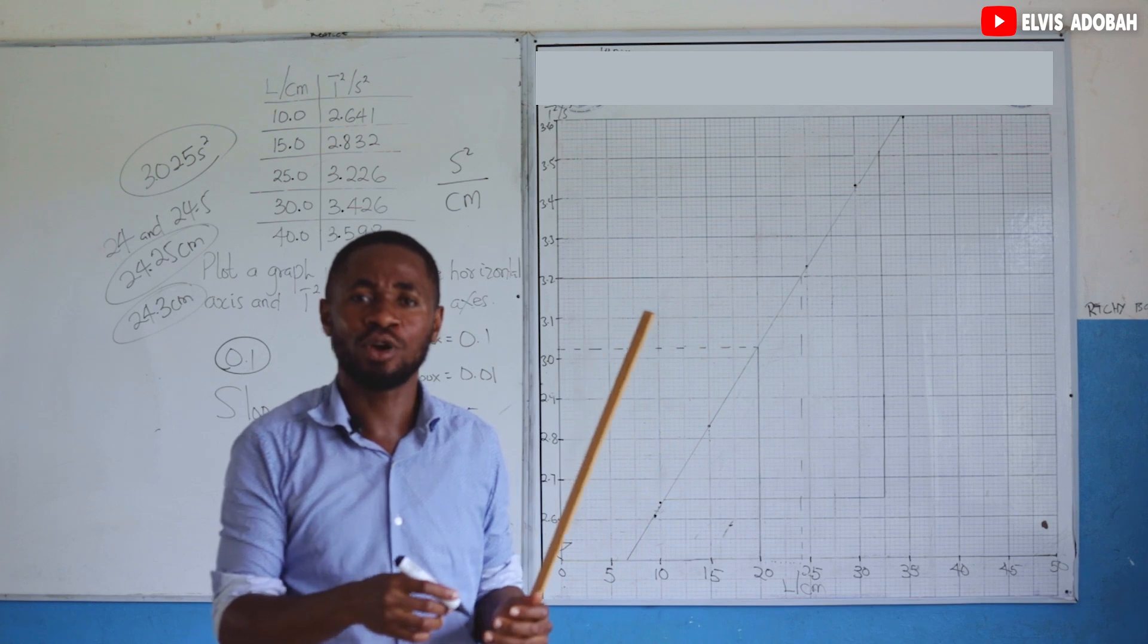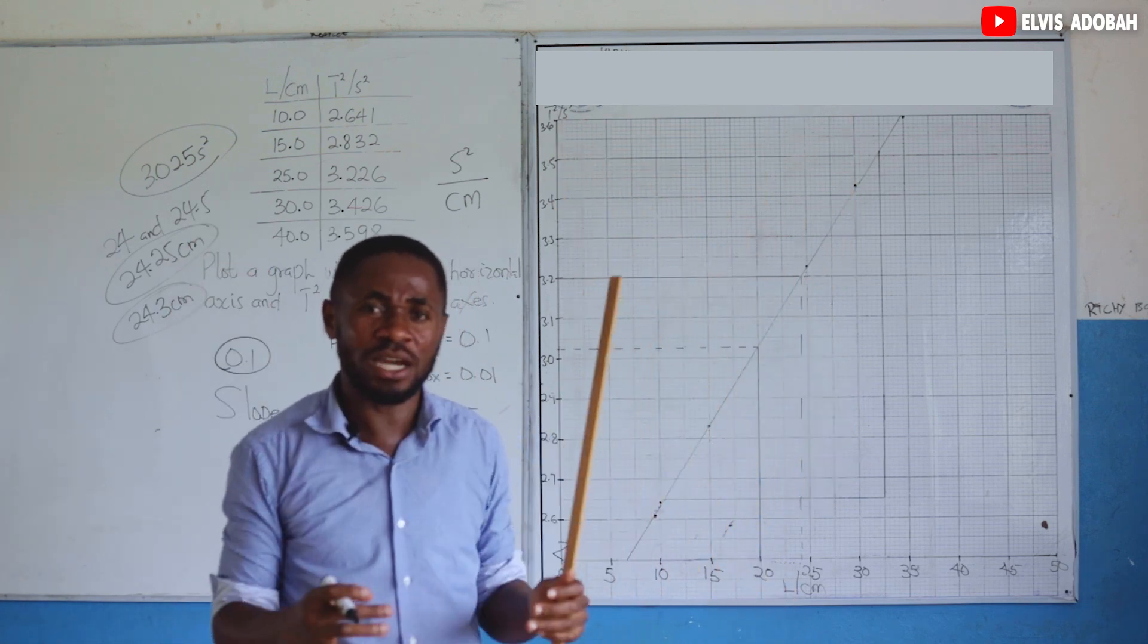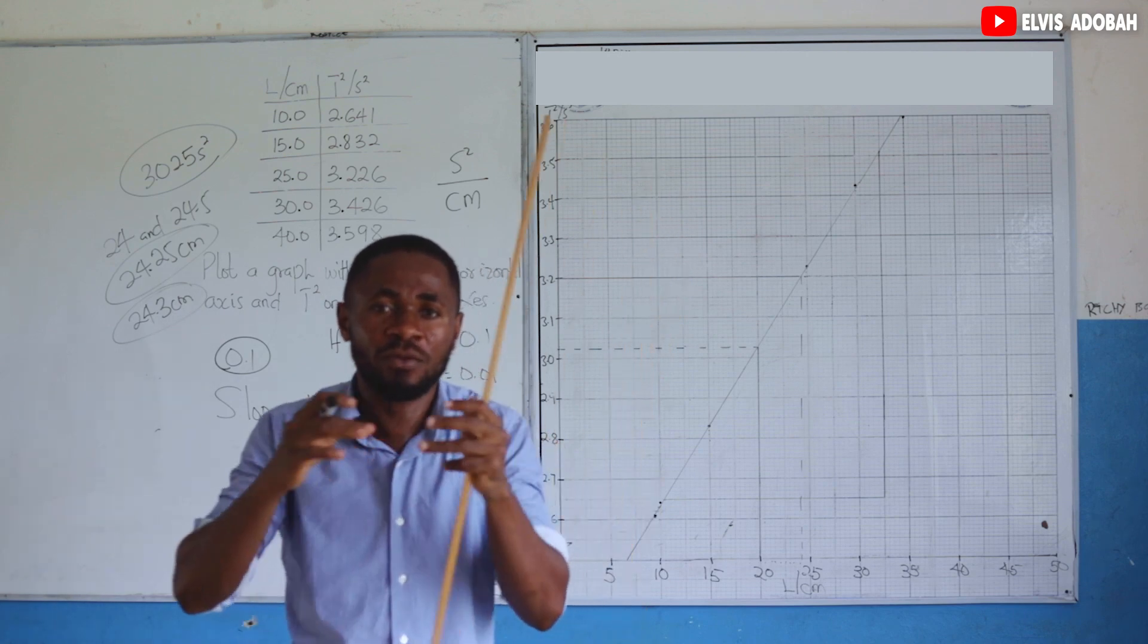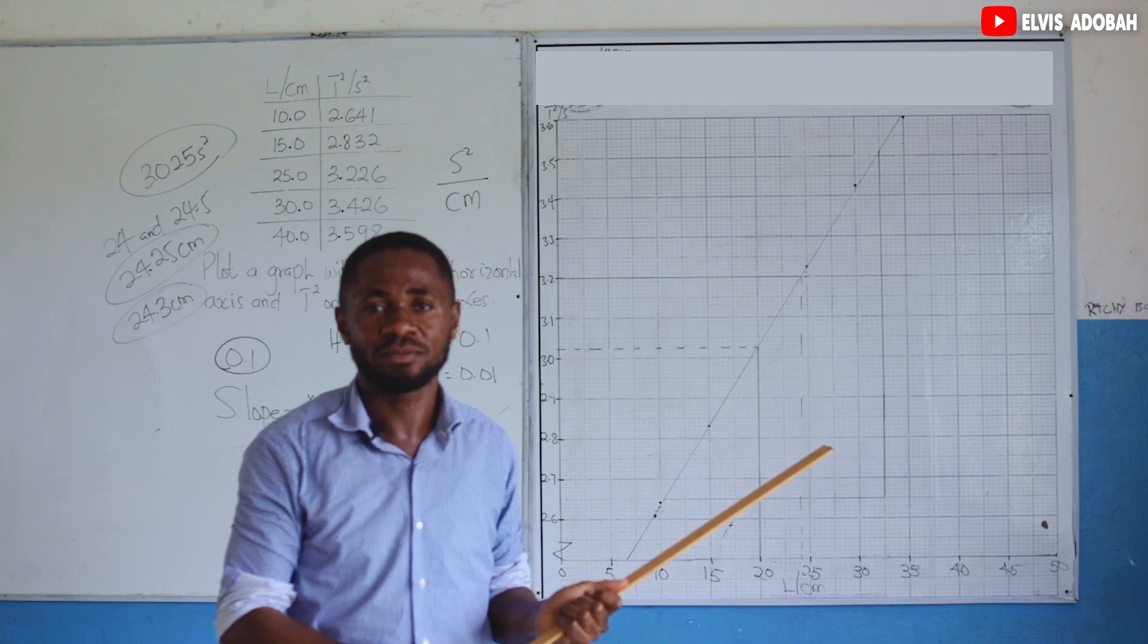comment in the comment section below. I'll bring you values that are so close to each other for both the horizontal and the vertical axis values. Then I'll plot that graph and recap the slope all together. Thank you.